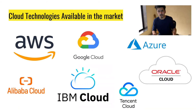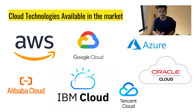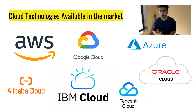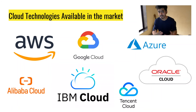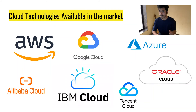Now let's talk about different cloud providers available in the market. We have many, such as AWS provided by Amazon, Google Cloud provided by Google, Microsoft Azure, Alibaba Cloud, IBM Cloud, Tencent Cloud, Oracle Cloud, and many more. Each of these clouds has its own advantages and disadvantages, but the fundamental concepts are the same — providing computing power, storage, database servers, and everything.